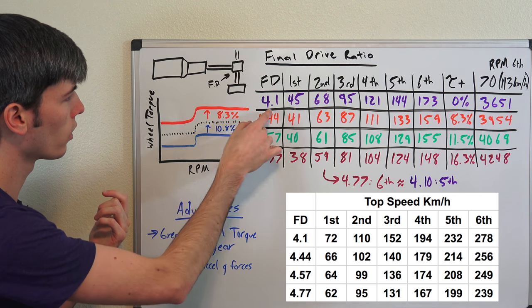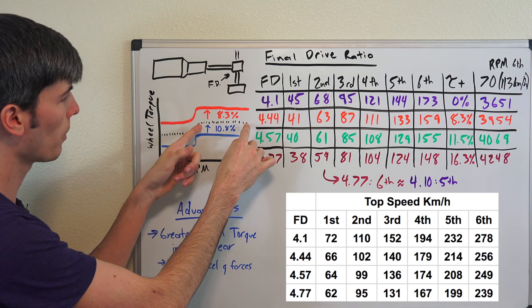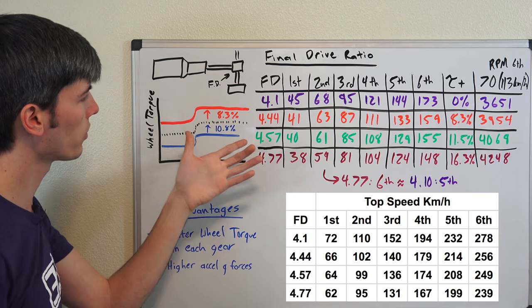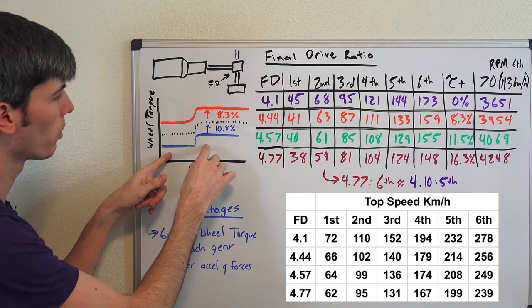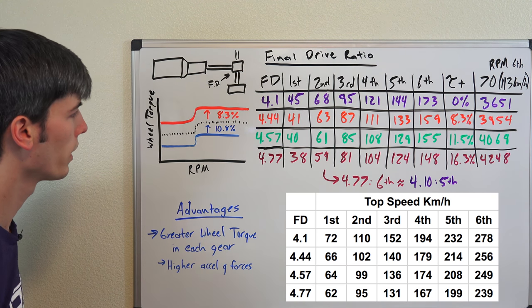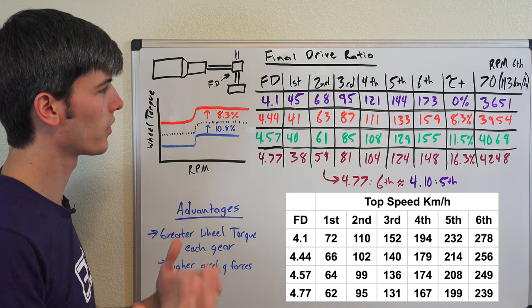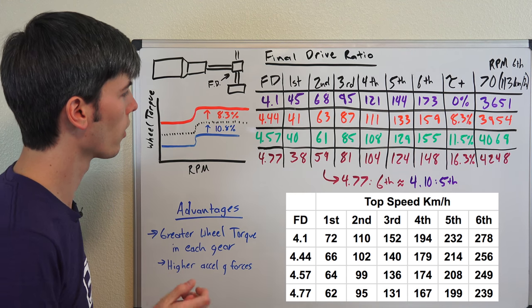Same can go in the opposite direction. So you could sacrifice and go down to a 3.7 for example. And a 3.7 if you were to go up to a 4.1 that'd give you a boost of 10.8% in wheel torque. But this 3.7 is going to be able to hit much higher top speeds rather than the 4.1.